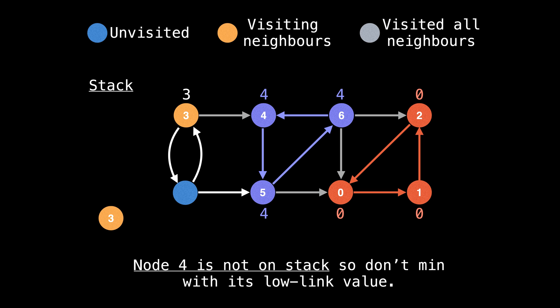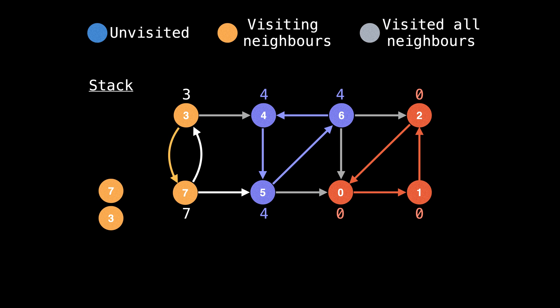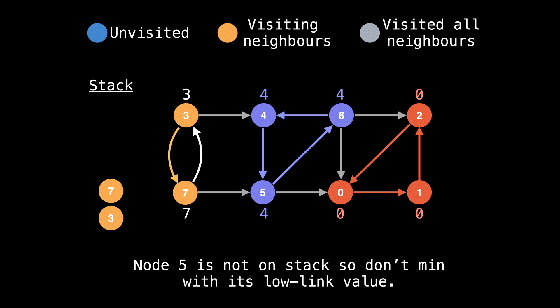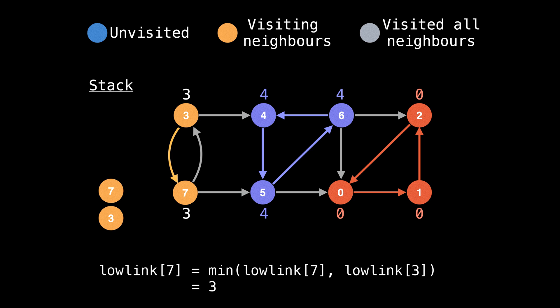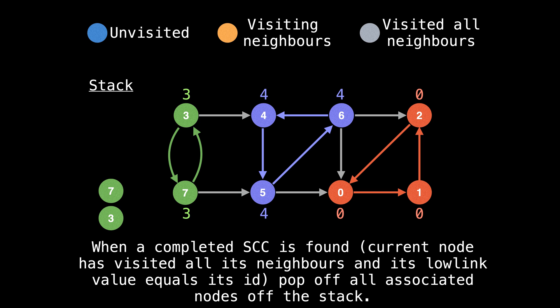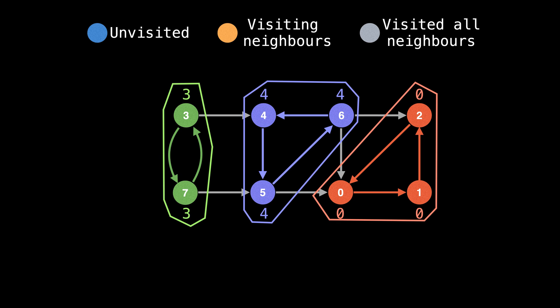You will also notice that node three's ID is equal to its low-link value, so it should be the start of a strongly connected component. However, we have not finished visiting all of node three's neighbors, so we cannot make that assessment just yet. Now take the downward edge to visit node seven, then take the edge to node five. On the callback, notice that node five is not on the stack, so we don't min with its low-link value. Now up to node three — on the callback we can min with node three's low-link since node three is on the stack, and also min with node seven. So now we've finished with the last strongly connected component. All we need to do is remove all associated nodes from the stack. And that's how Tarjan's algorithm works to find strongly connected components.